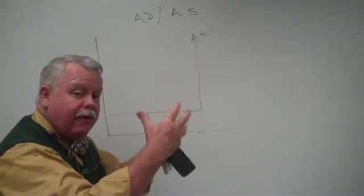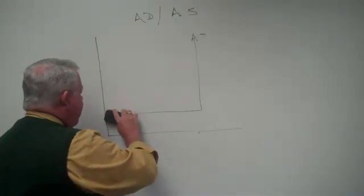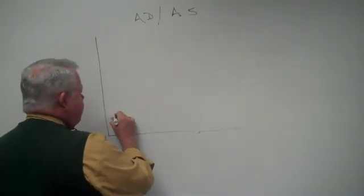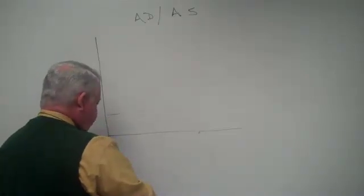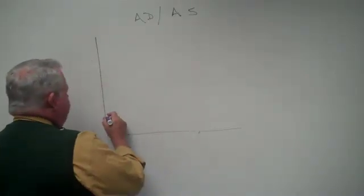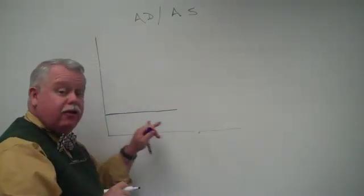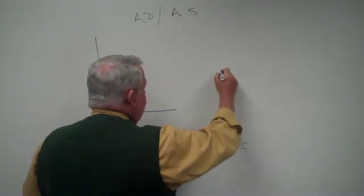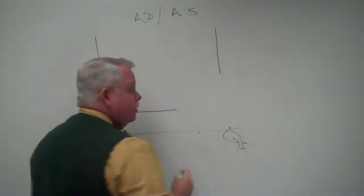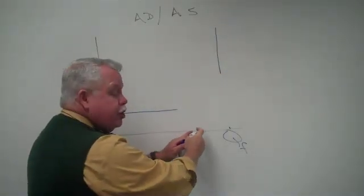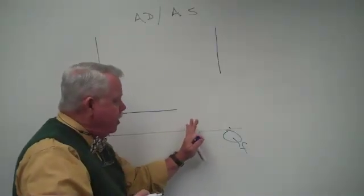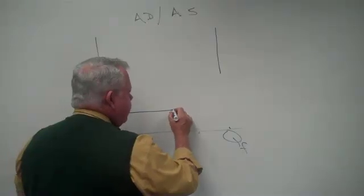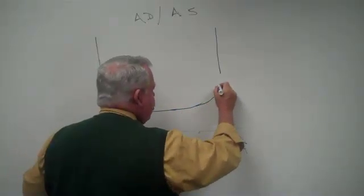Once we got through talking about that, you may recall we did the algebraic model with it. Then we talked about an aggregate supply curve that was partially Keynesian and at full employment was classical, but that over some range as you increase your economic activity closer to full employment, that the aggregate supply curve began to take on some slope.